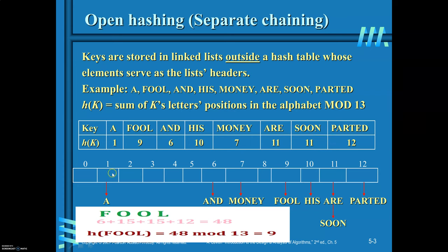Now, how to organize these keys in the open hash technique: 'a' is stored as a linked list, its header is stored in the first index. Similarly for 'add', 'money', 'full', and 'his'. For 'all', it appears first, so in the linked list 'R' is the first key. Then 'soon' is the second key — it is inserted as the second node in the linked list. The header of this linked list is stored in the 11th index.